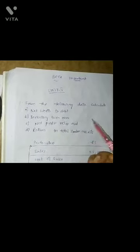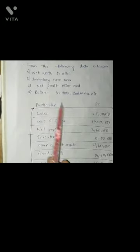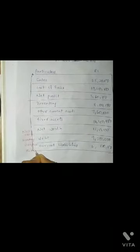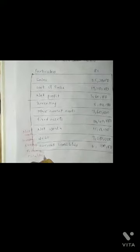In Unit 5, the first question: from the following data, they have given some data sheet. We need to find net worth to debit, net worth to debit inventory turnover ratio, net profit ratio, and return on total assets. From this table, you need to find these four ratios: net worth, inventory, net profit, and return on total ratio.